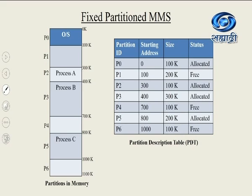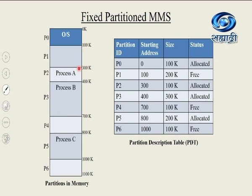The PDT contains partition ID, starting address, size and status of partition — that is, whether it is allocated or free. You can see the diagram of the fixed partition memory management system. There are total 7 partitions from P0 to P6. The sizes of these partitions are variable — for example, partition P0 is from 0K to 100K, size 100K; P1 is from 100 to 300, that is 200K, and so on. Processes are loaded in various partitions — process A in P2, B in P3, and process C in P5.